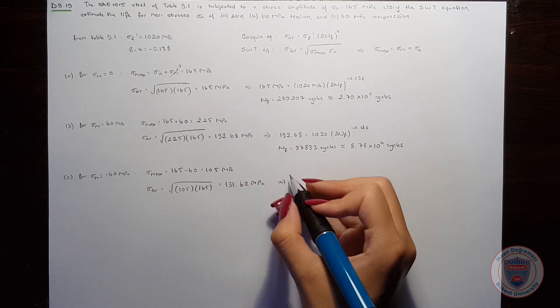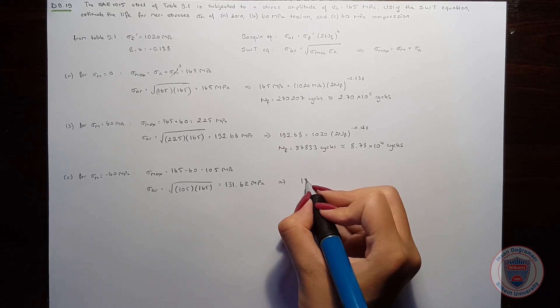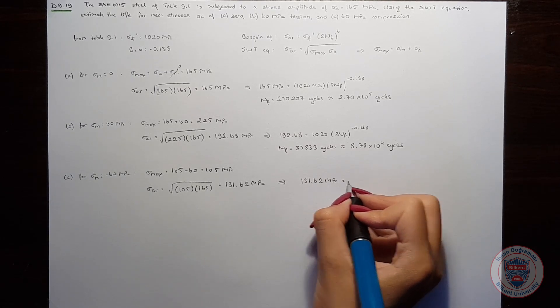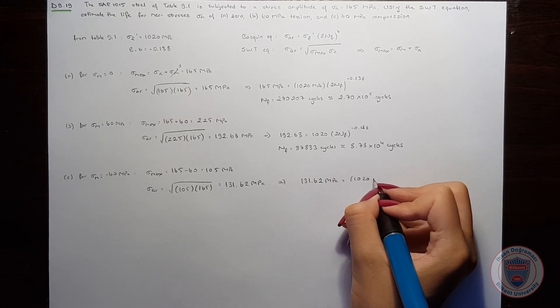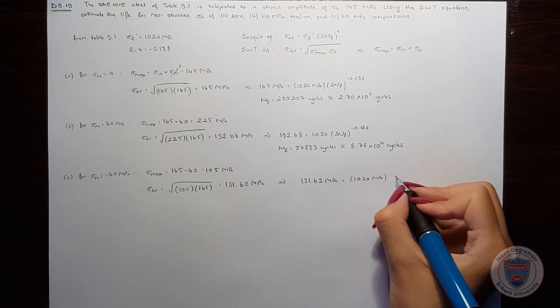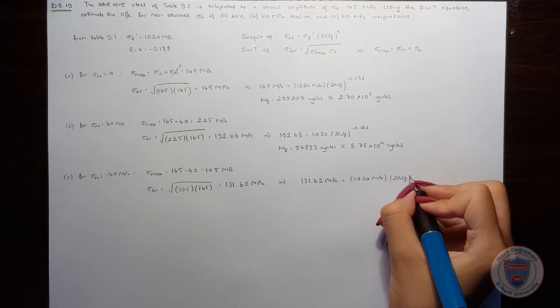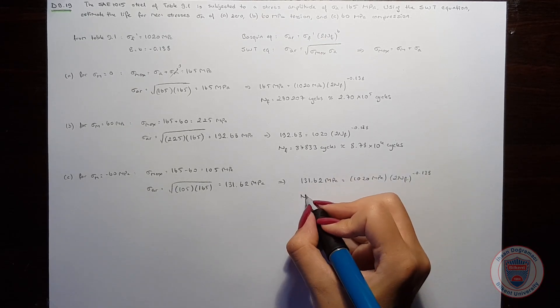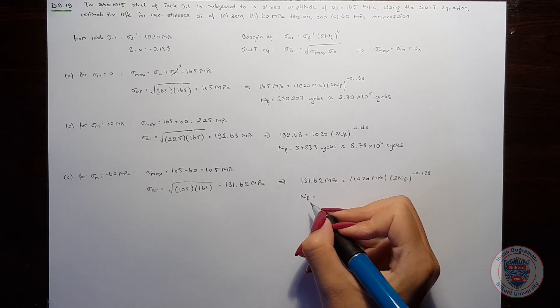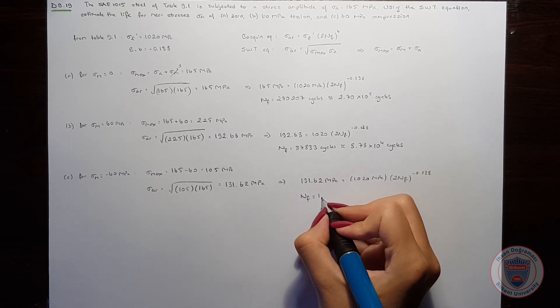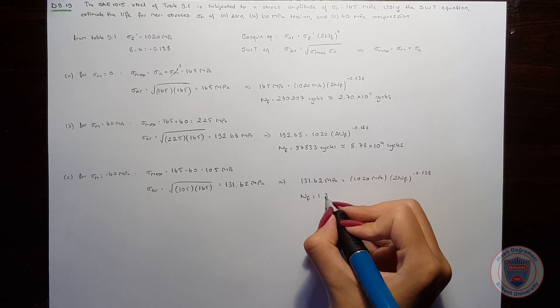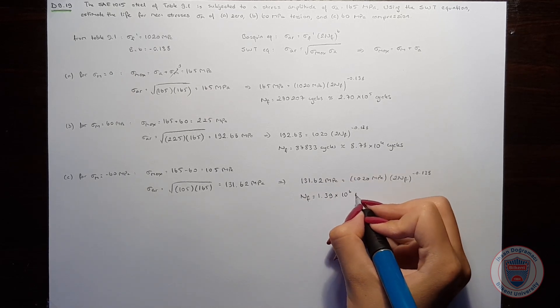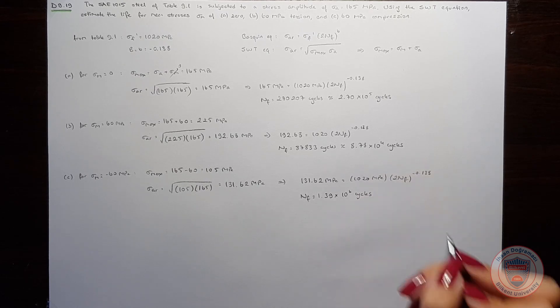Again, using the Basquin equation, we will obtain the number of cycles as 1.39 times 10 to the power of 6 cycles.